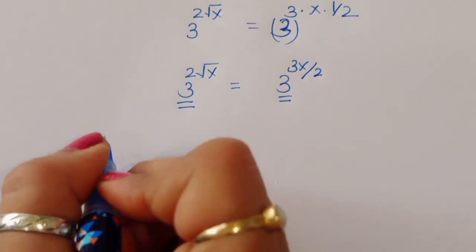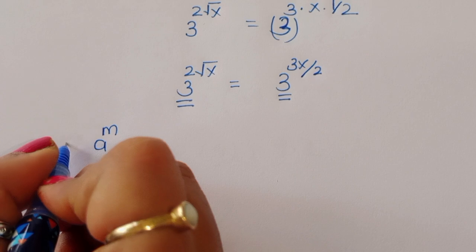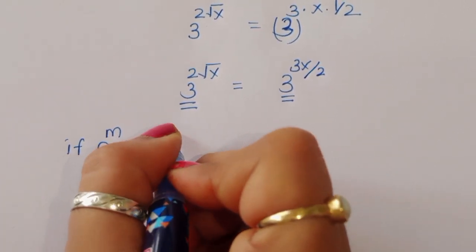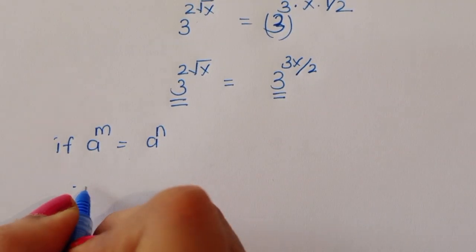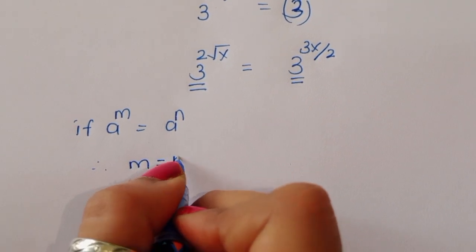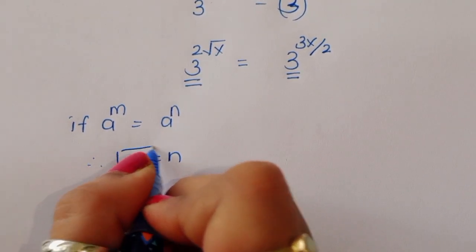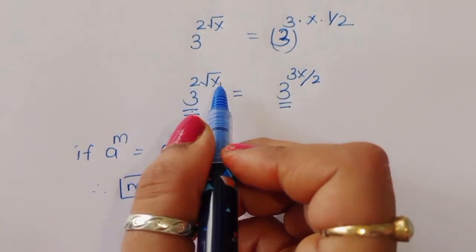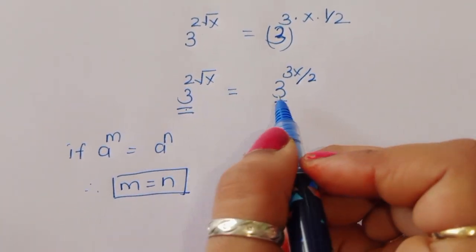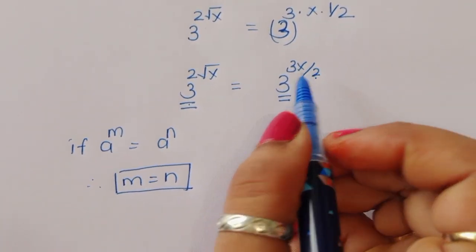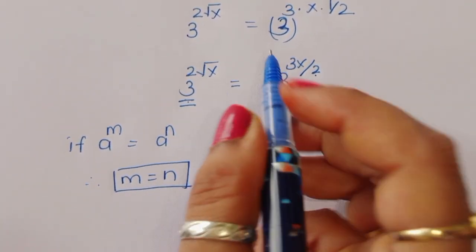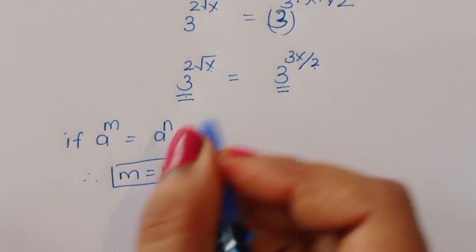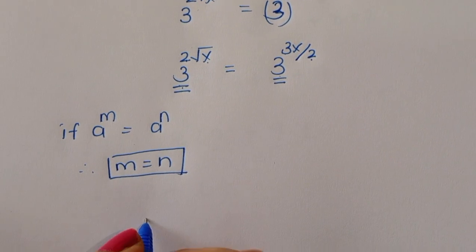We know the formula: if a^m = a^n, then m = n. Using this formula here, since 3^(2√x) = 3^(3x/2) and the base is the same, we can write 2√x = 3x/2.